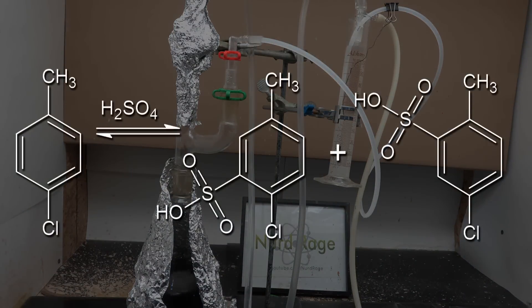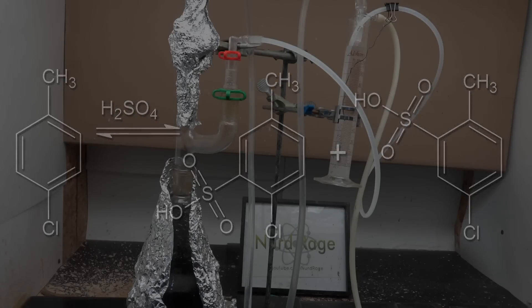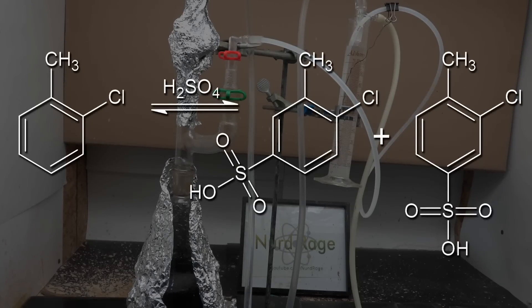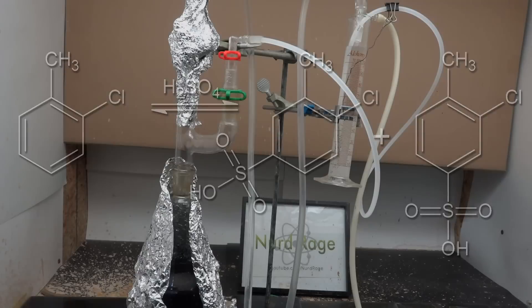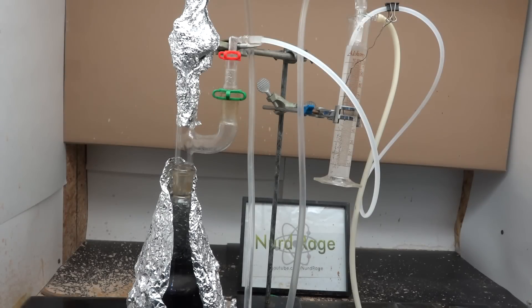Now even though some of the parachlorotoluene is reacting, this isn't a problem because the reaction is reversible. So the sulfuric acid regenerated can go to react with the ortho isomer. If we use equal or less sulfuric acid than the ortho isomer, we can get almost exclusive ortho sulfonation. Unfortunately this is rather slow. So keep the reaction running until the water content in the Dean-Stark trap stops increasing, and then run an extra hour to ensure equilibrium is reached.